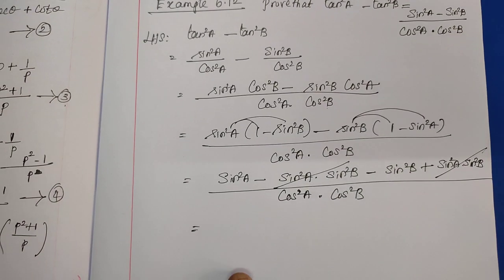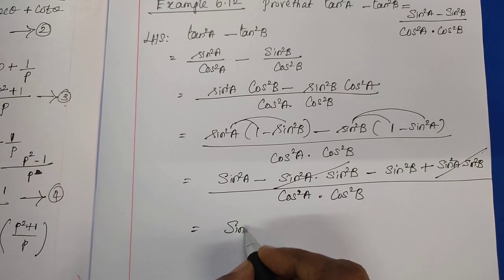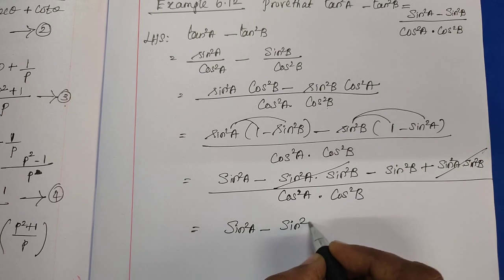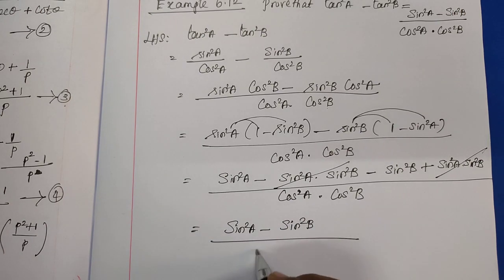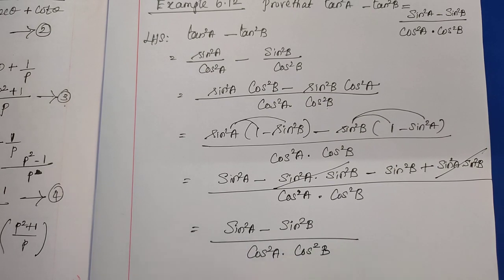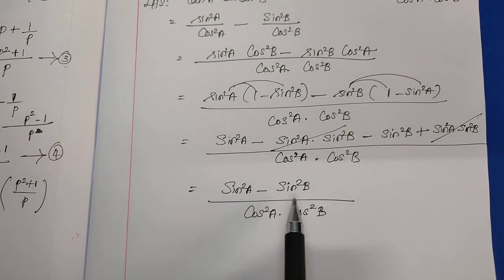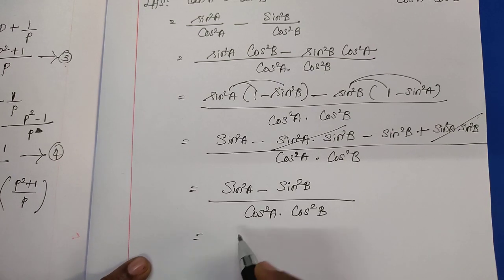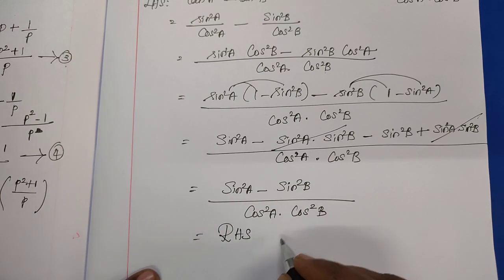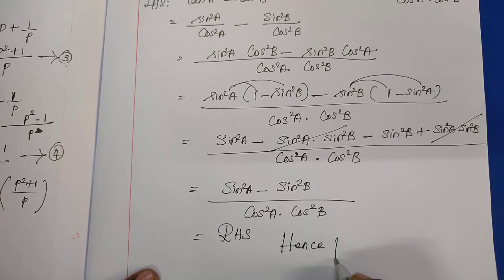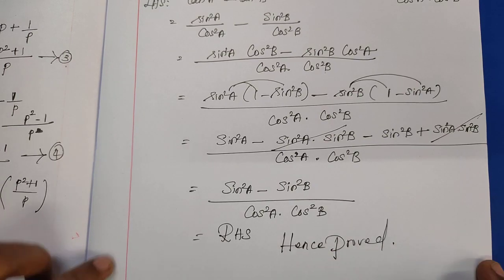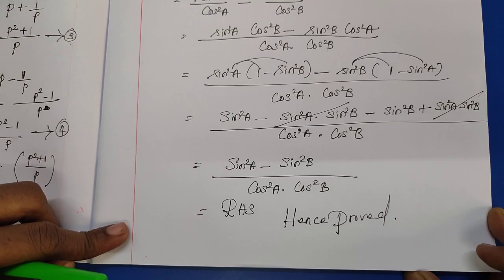The minus sin squared a times sin squared b and plus sin squared a times sin squared b cancel each other. The remaining result is sin squared a minus sin squared b, divided by cos squared a times cos squared b. This equals the right-hand side, so our left-hand side tan squared a minus tan squared b equals the required expression. The result is proved. Example 6.12 is complete.